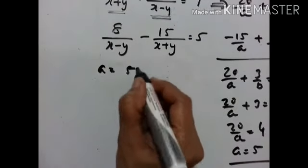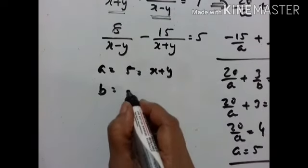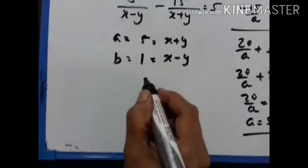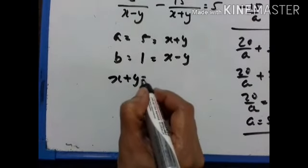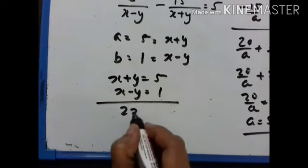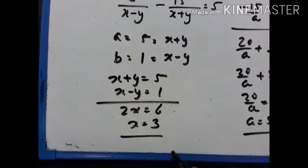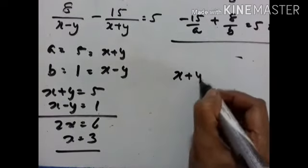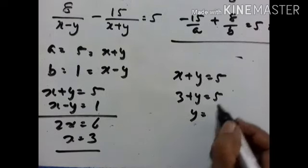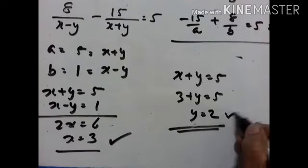So a equals 5, meaning x plus y equals 5, and b equals 1, meaning x minus y equals 1. Adding these two equations: 2x equals 6, so x equals 3. Substituting back into x plus y equals 5: y equals 2. Therefore x equals 3 and y equals 2.